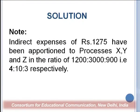One important thing to remember when solving examination questions: you must provide proper notes. For example, I have noted that indirect expenses of 1275 have been apportioned to processes X, Y, Z in the ratio of 1200:3900 — which is the labour cost — in ratio 4:10:3. In this way, you simply calculate the finished cost. Process X costs are transferred to Y, process Y costs plus input from X are transferred to Z, and process Z all costs are transferred to finished goods. This is how you prepare process accounting. Thank you very much.